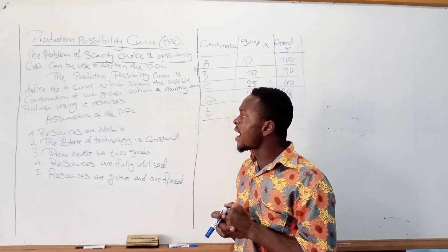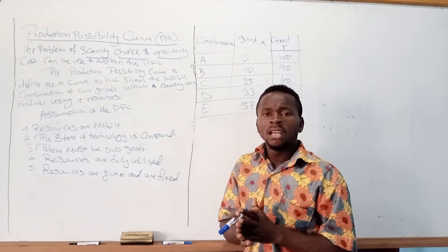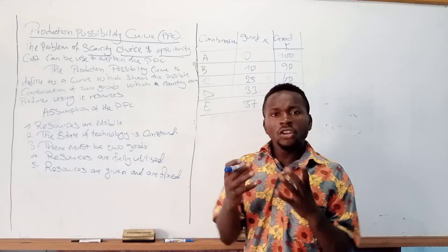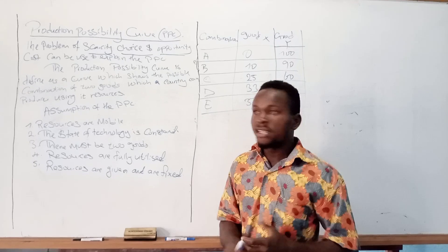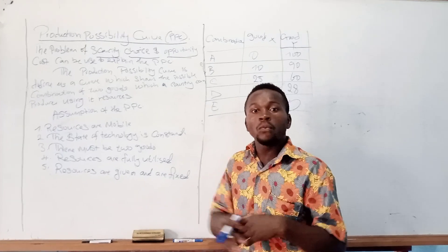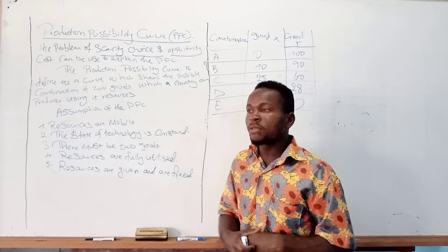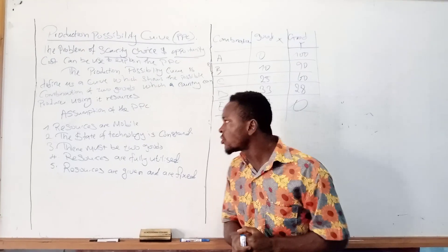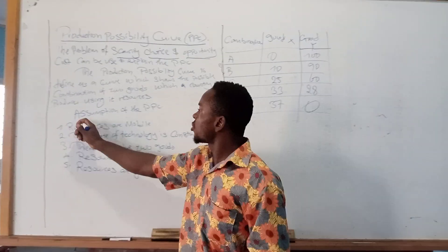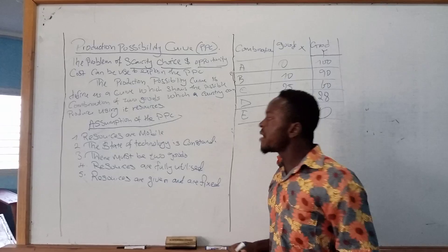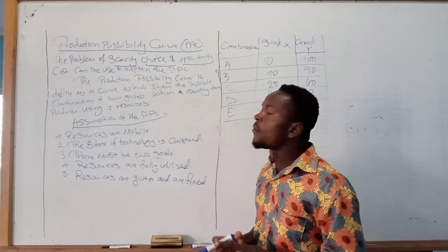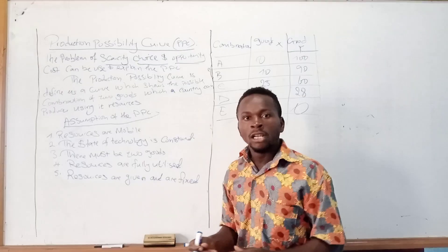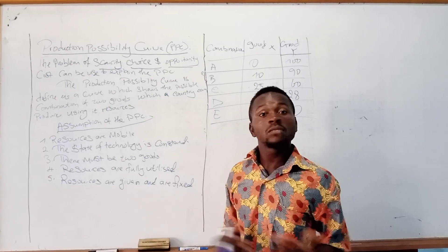In the production possibility curve, we have several assumptions that we need to make before coming out with the production possibility curve. If these assumptions are met, then we can come up with the production possibility curve. Number one: when we are talking about the production possibility curve, we must always assume that resources are mobile. Resources must be mobile before we come up with the production possibility curve.